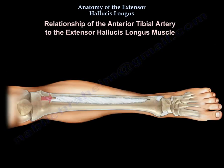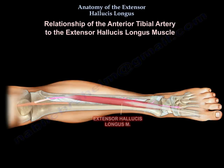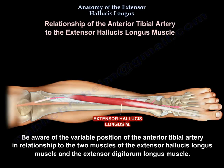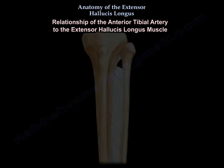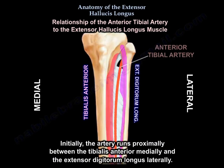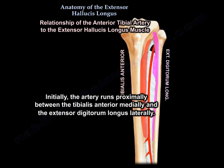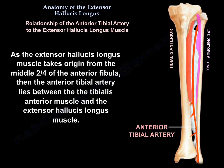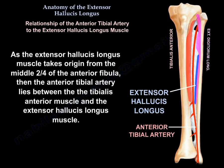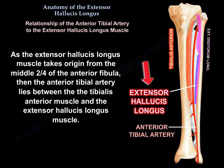Regarding the relationship of the anterior tibial artery to the extensor hallucis longus muscle, be aware of the variable position of the anterior tibial artery in relation to the extensor hallucis longus and extensor digitorum longus muscles. Initially, the artery runs proximally between the tibialis anterior medially and the extensor digitorum longus laterally. Then, as the extensor hallucis longus takes origin from the middle two-fourths of the anterior fibula, the anterior tibial artery lies between the tibialis anterior and the extensor hallucis longus muscle.